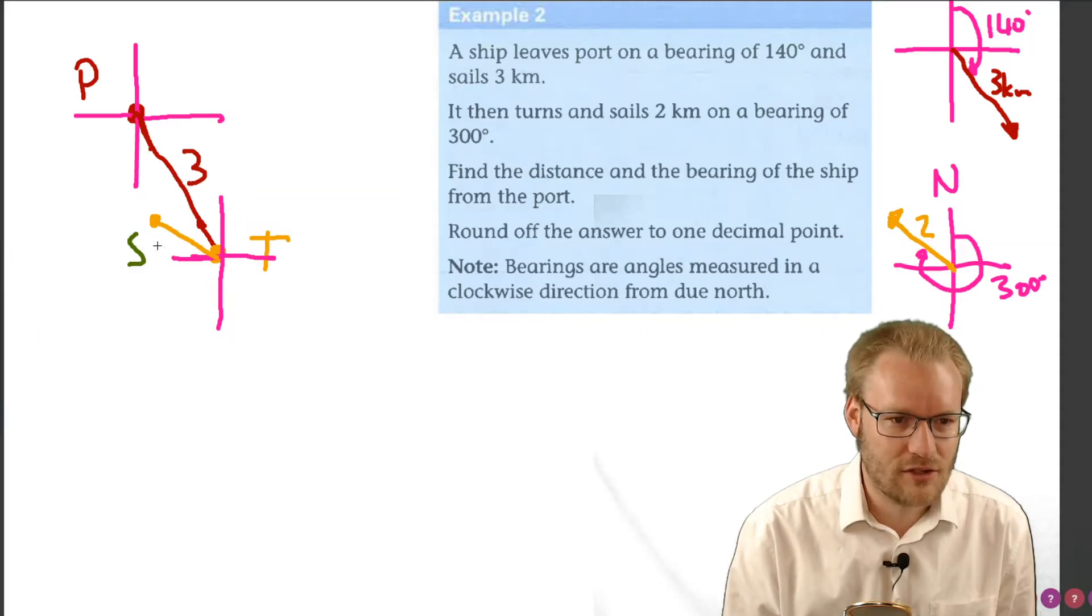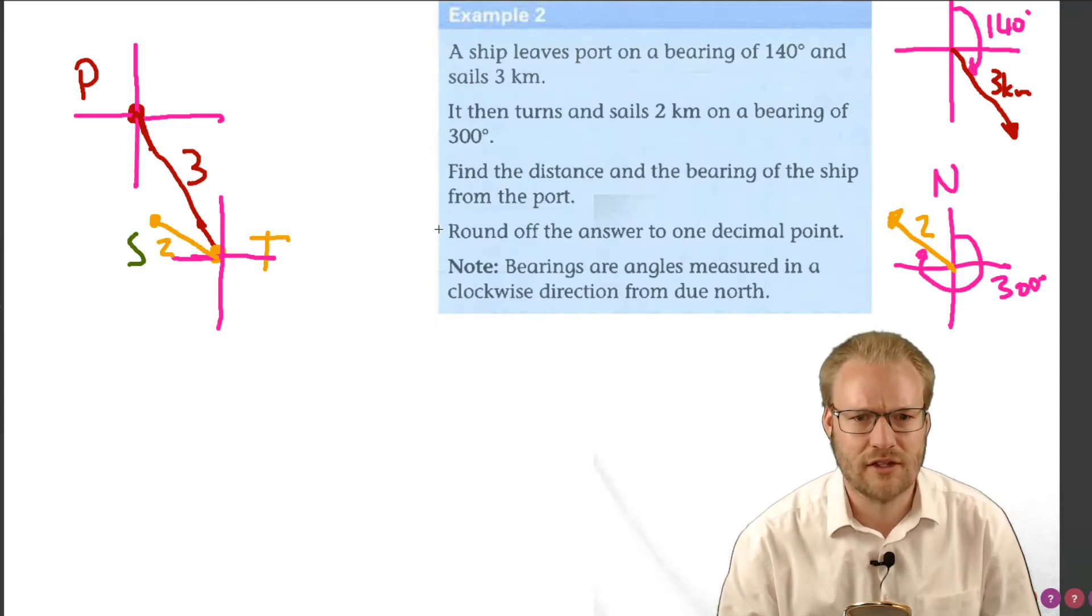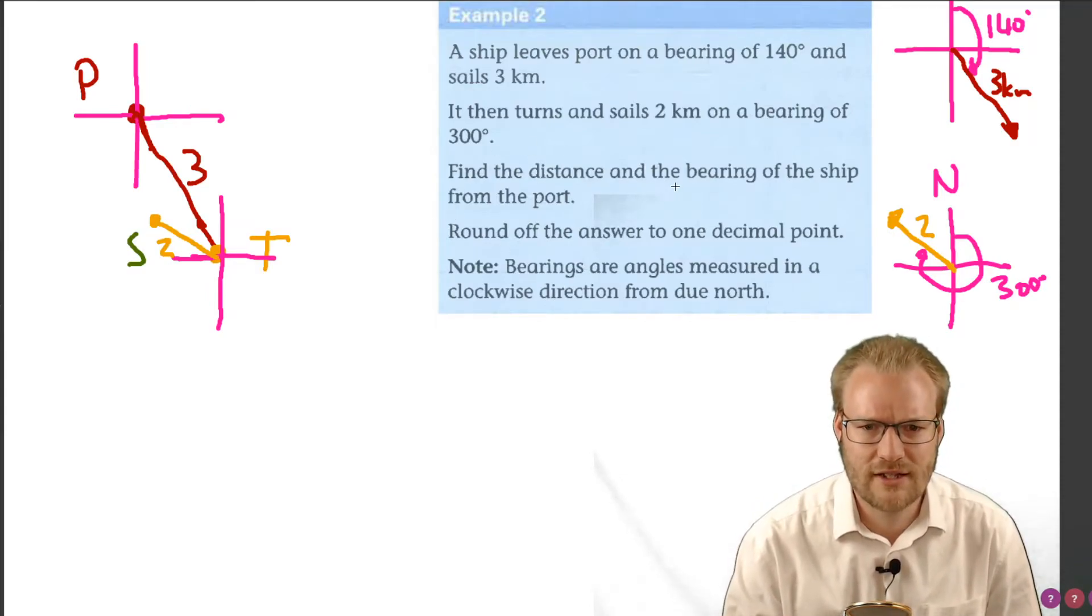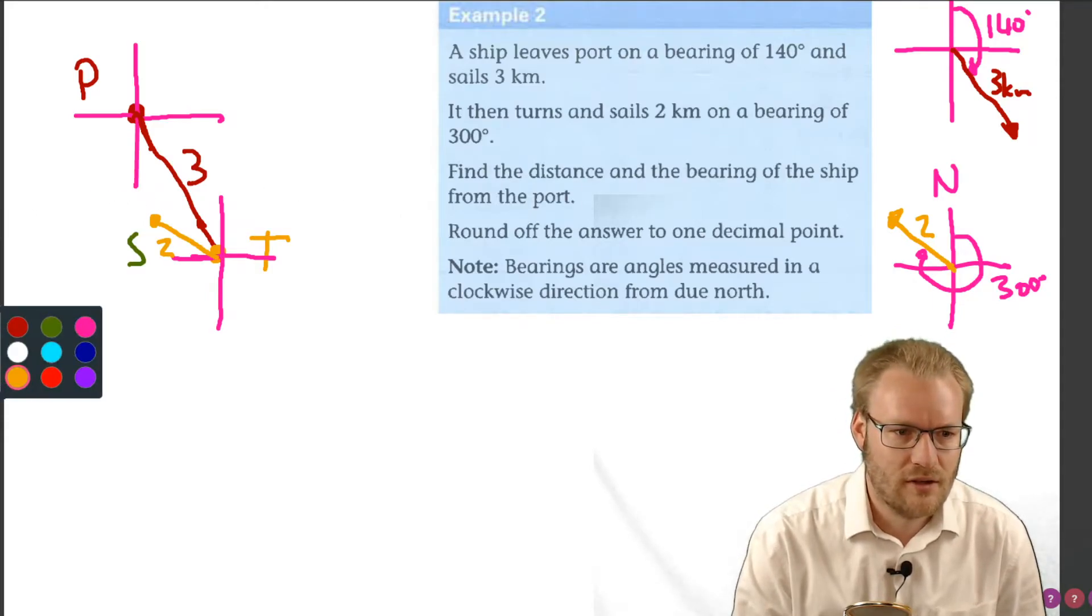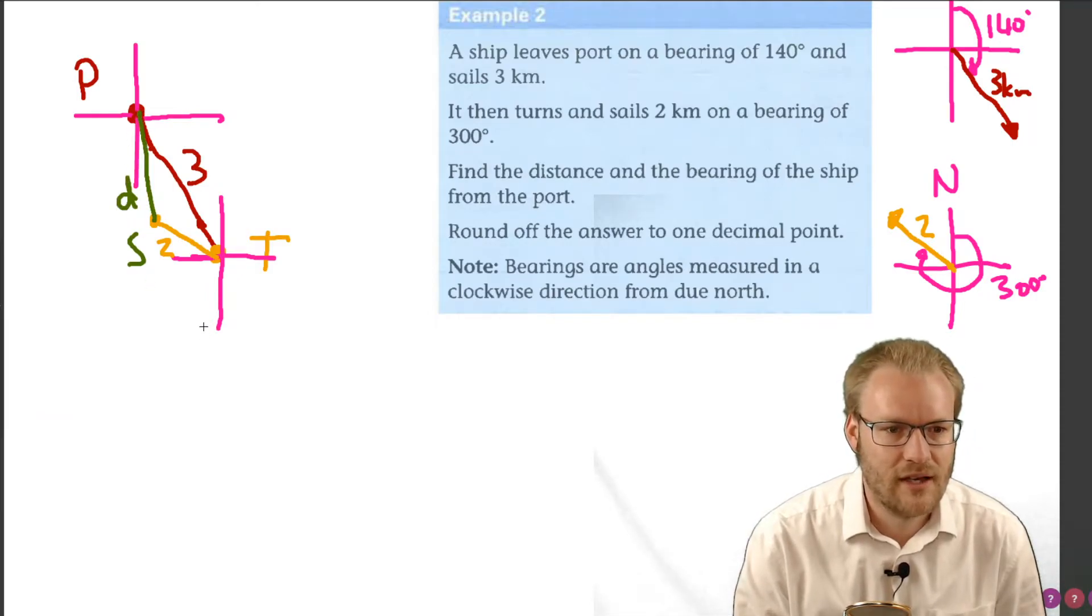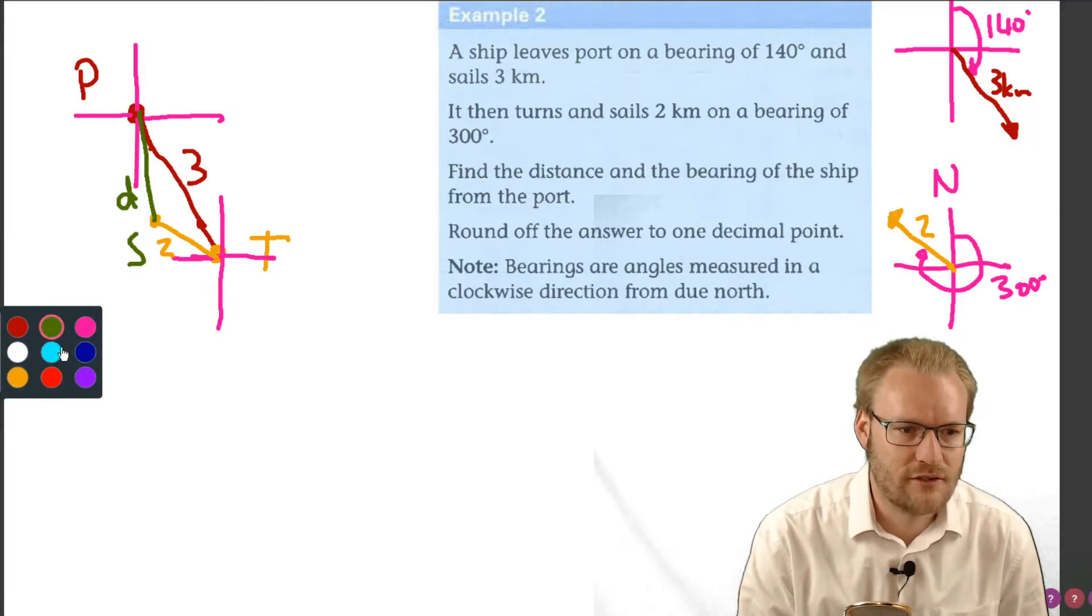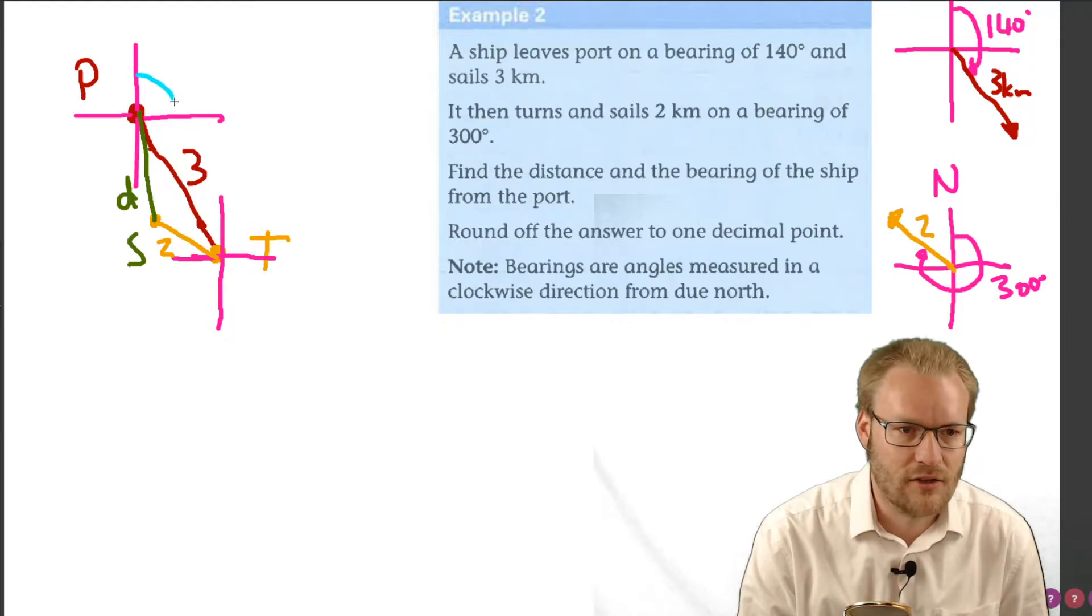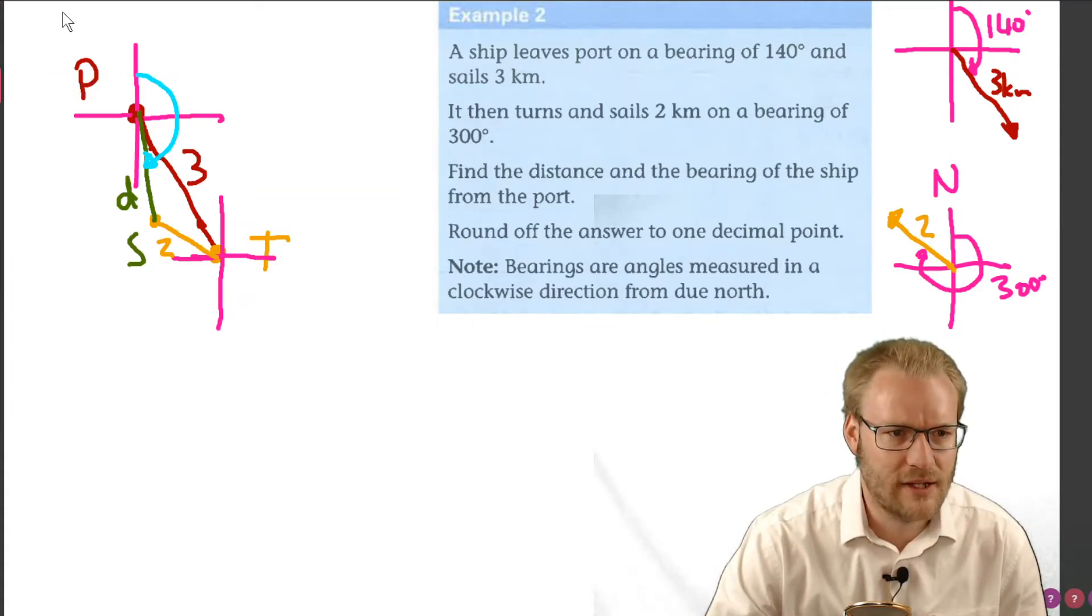This bit here was 2 kilometers. Now we're asked a few things: find the distance and the bearing of the ship from the port. We need to figure out this last bit, what d is, and we need to figure out the bearing from port. We need to also figure out what this angle around here is. I'm going to leave that diagram there.